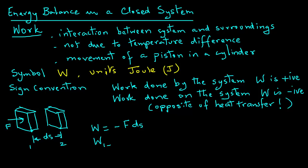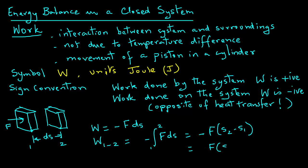If the locations are 1 to 2, then we can also write this in integral form as W1-2 equals minus the integral from 1 to 2 of F times ds, which evaluates to minus F(s2 minus s1), equal to F(s1 minus s2).